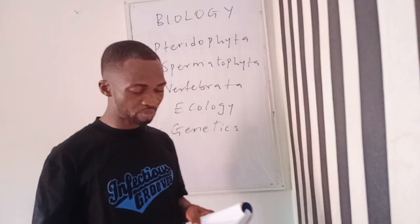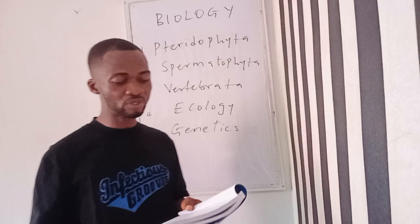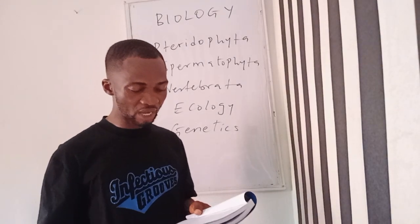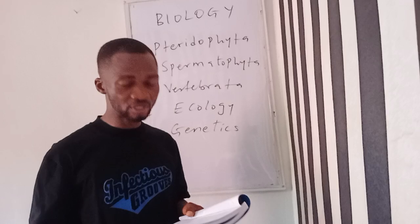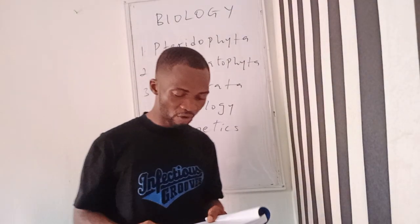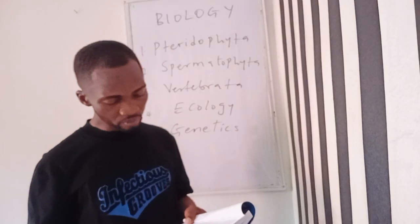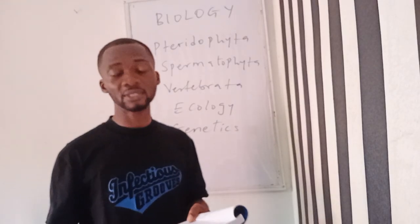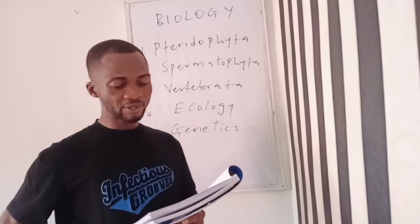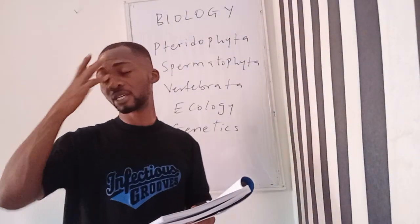Chapter twelve covers population genetics including the Hardy-Weinberg equilibrium, significance of Hardy-Weinberg, calculations of gene frequencies in populations, and applications of population genetics. Chapter thirteen covers quantitative inheritance and heritability — qualitative versus polygenic inheritance, also called quantitative inheritance.